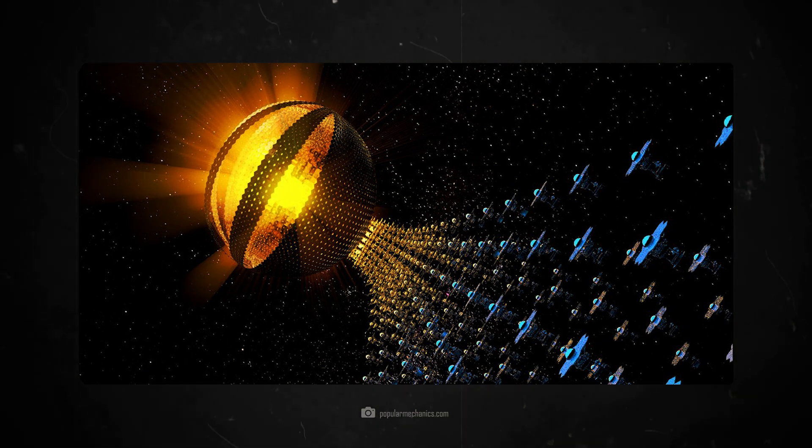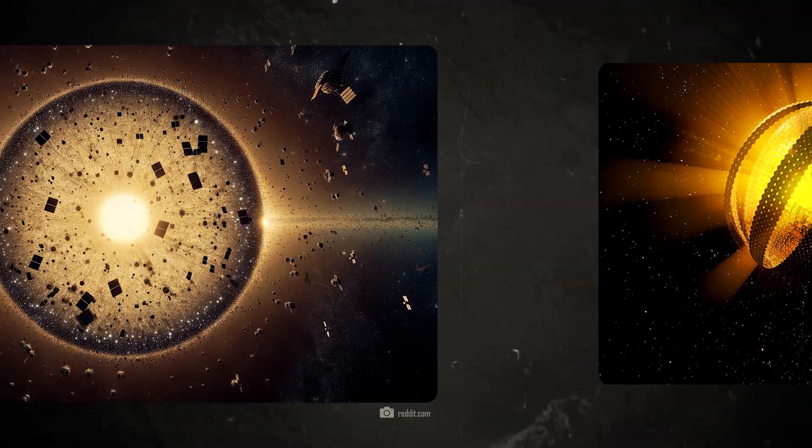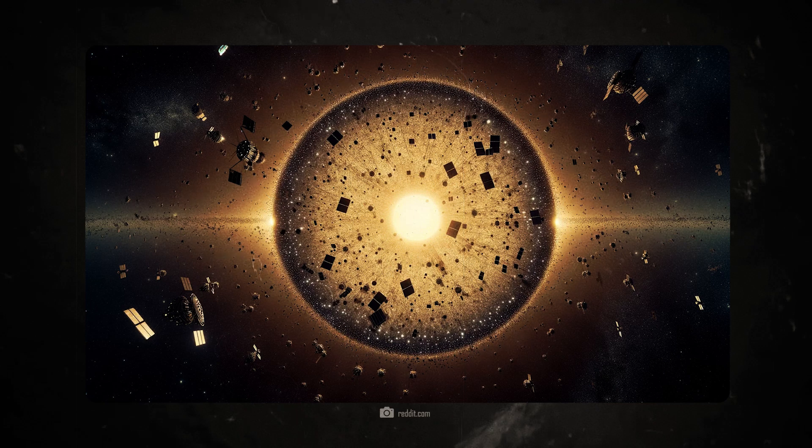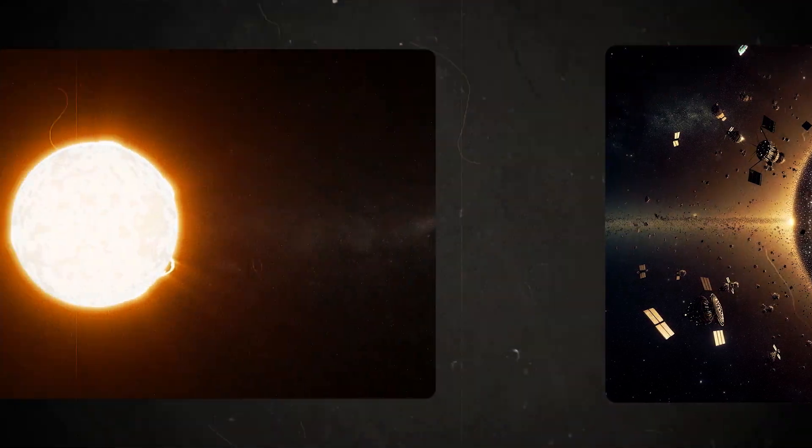A Dyson swarm consists of many individual satellites or structures that orbit around a star and harvest its energy without completely obscuring the star.